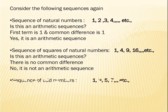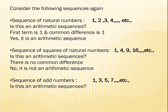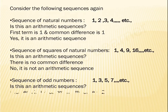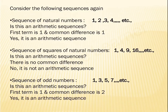Consider the sequence of odd numbers: 1, 3, 5, 7, etc. Is this an arithmetic sequence? The first term is 1. Checking common difference: 3 − 1 = 2, 5 − 3 = 2, 7 − 5 = 2. The common difference is consistently 2. Hence, the sequence of odd numbers is an arithmetic sequence with first term 1 and common difference 2.